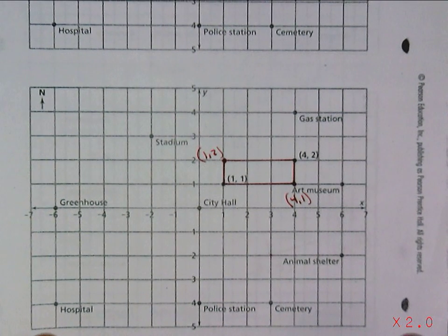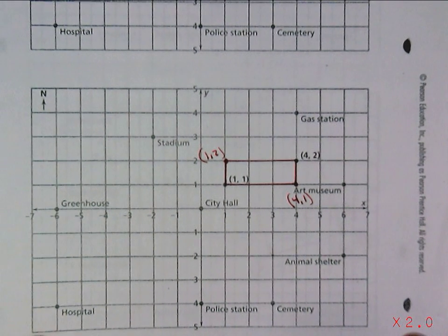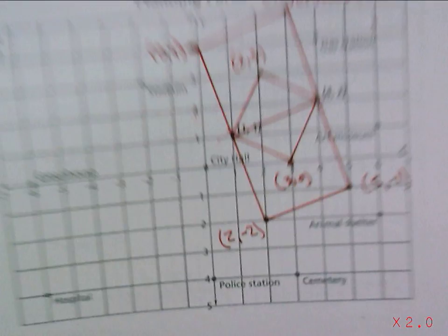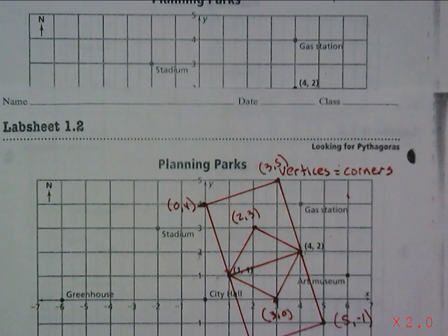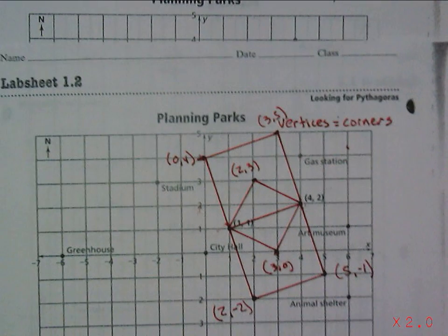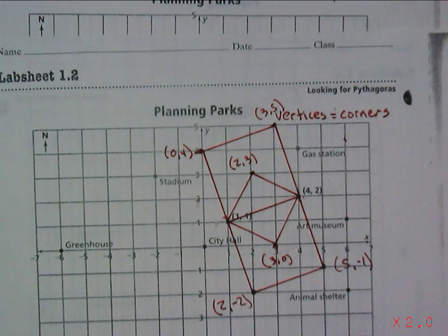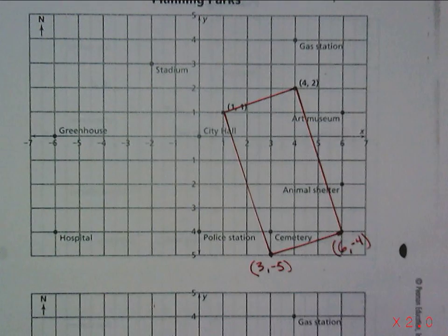Those would be the vertices of a rectangular park. So you can see that rectangular park is much larger than my original rectangular park, but they're both rectangles. And so I have now my square parks and my rectangular parks.